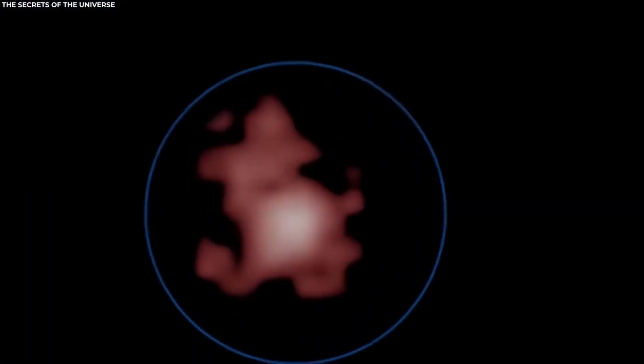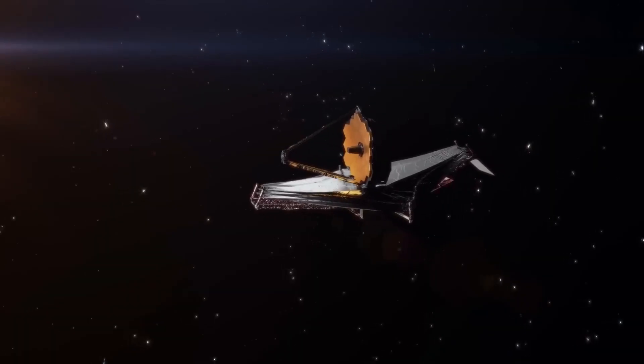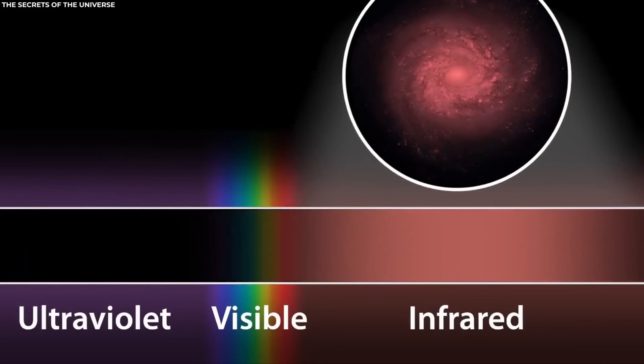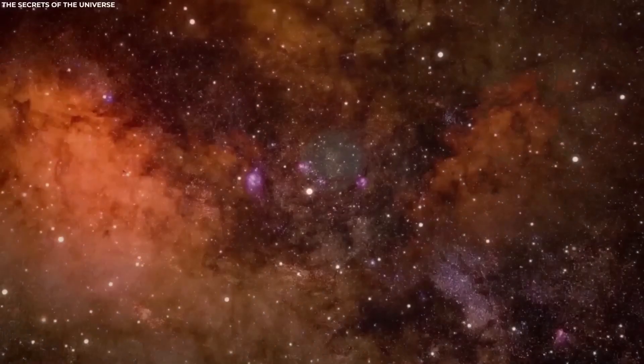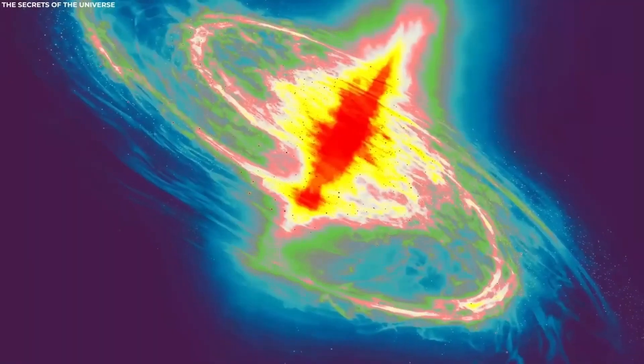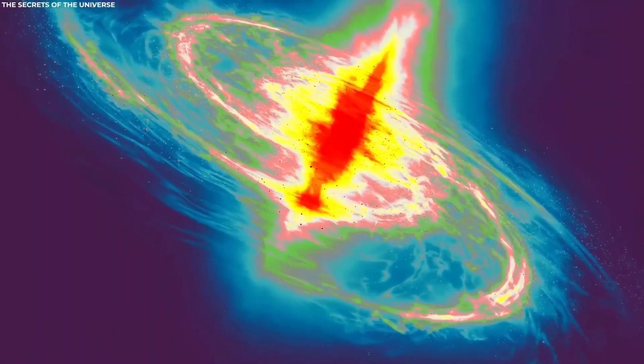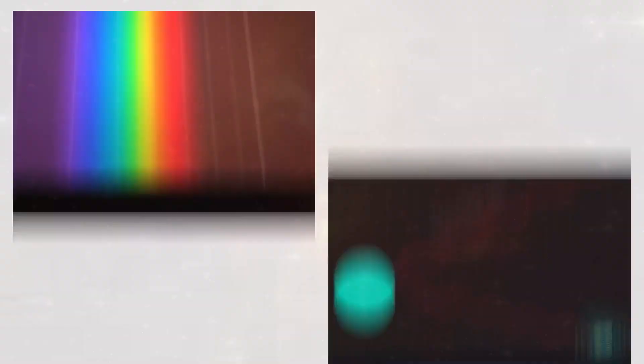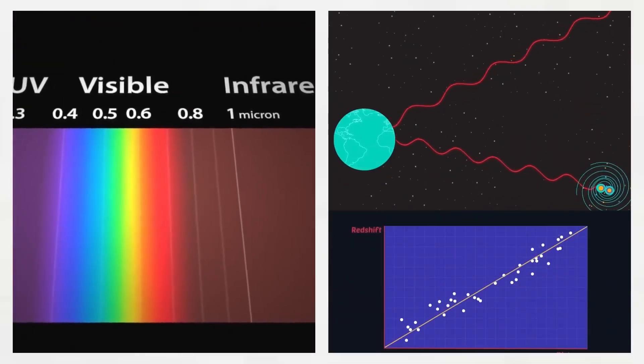To understand these distances, astronomers use redshift measurements. Redshift occurs as the universe expands and galaxies move away from us, stretching their light towards longer, redder wavelengths, a phenomenon tied to the Doppler effect. While redshift can be estimated through various filters, spectroscopy offers a more precise measurement by analyzing the light's constituent wavelengths.